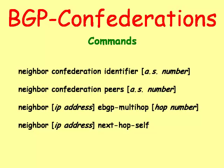The neighbor confederation identifier command identifies the autonomous system number as seen by EBGP routers. The neighbor confederation peers command identifies other neighboring confederations in the router's autonomous system. The neighbor EBGP multi-hop command allows routers to connect to EBGP routers even if the interface is not directly connected.